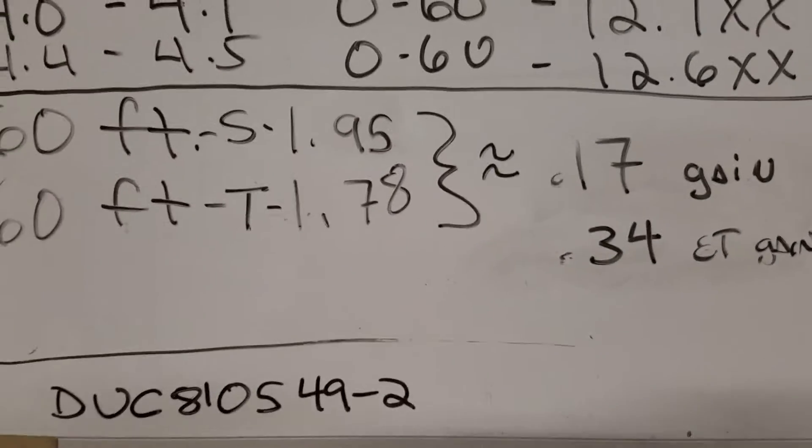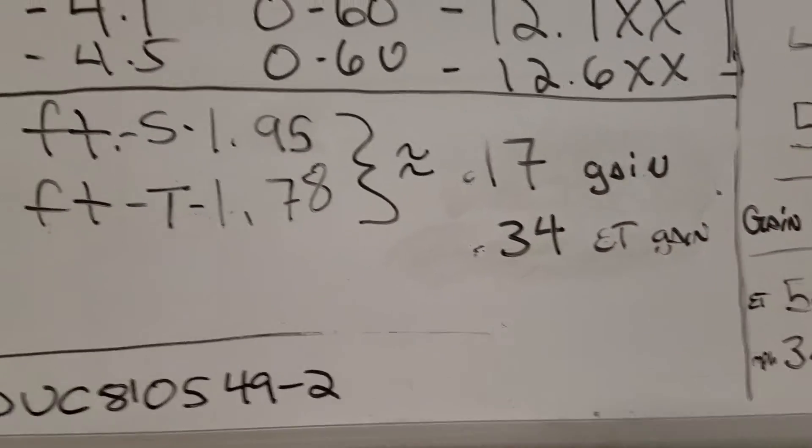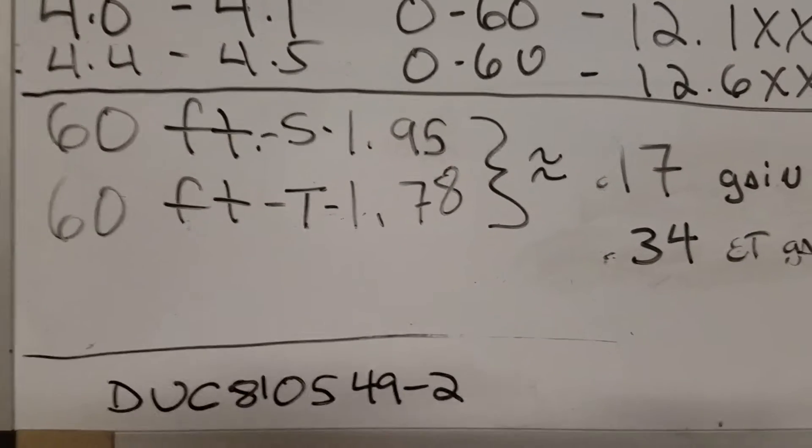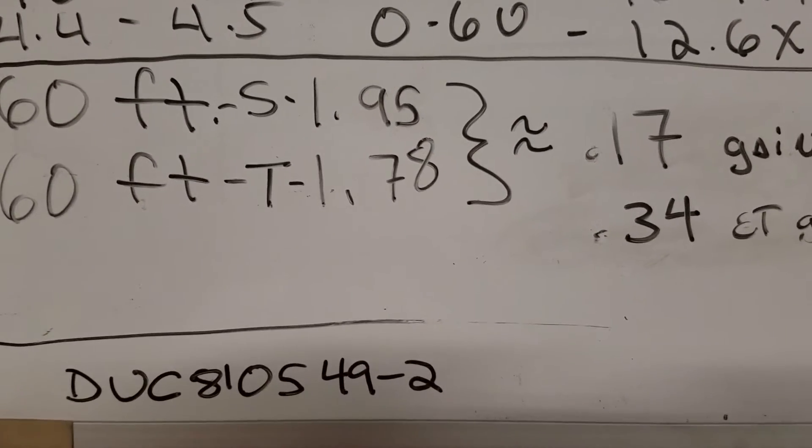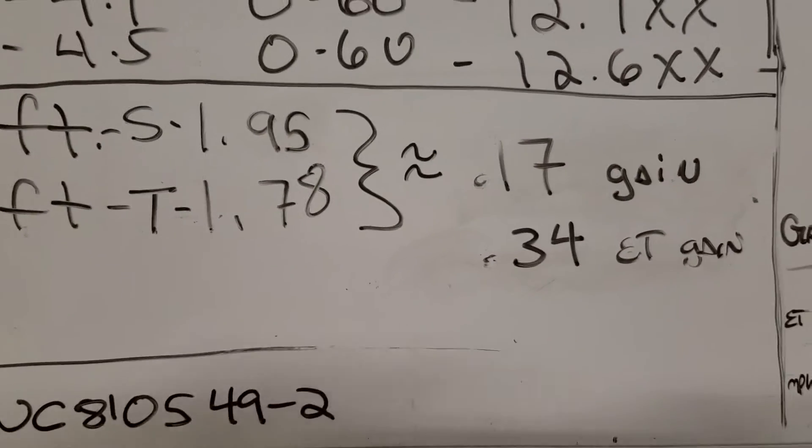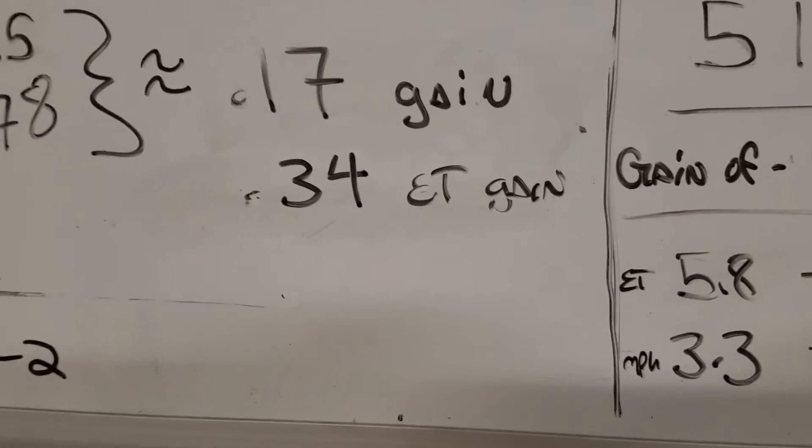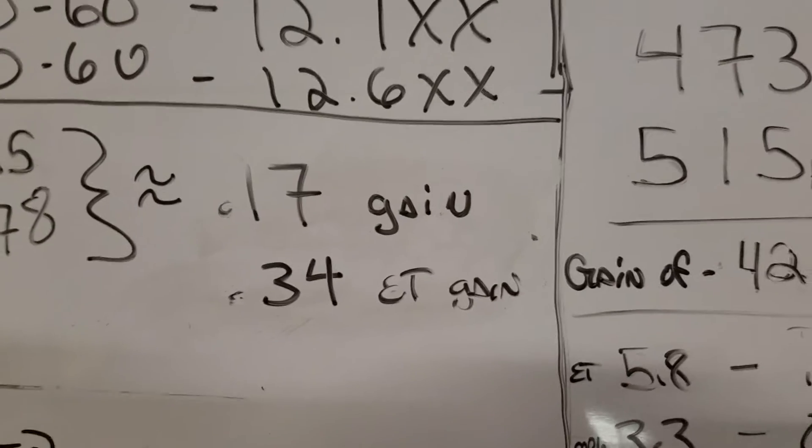60-foot times. Well, the tires netted right at a 0.17 gain. It was averaging 1.95 before on the stock tires, which if you know drag racing, that is not good. But it did get to a best average of a 1.78. And again, that 0.17 gain is going to get you about a 0.34 ET gain at the end of the track. So that's a definite strong result.